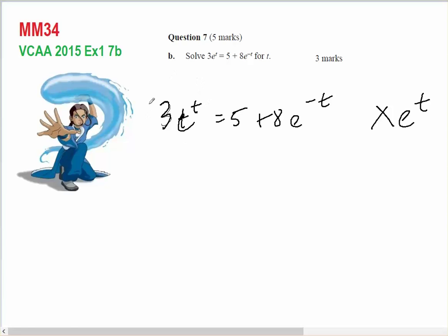So this times e^t becomes 3e^(2t) = 5e^t. And then the e^t and e^(-t) gives you e^0, which is 1, so plus 8.